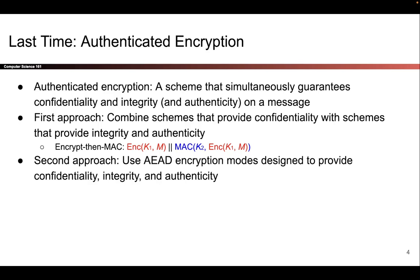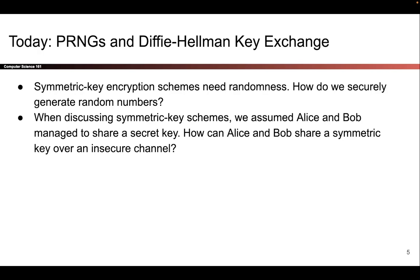So that's what we talked about last time. Today, we're going to answer two questions that we've been putting off for some time. One question is where the randomness comes from in our symmetric key schemes. The second question is how did Alice and Bob get that shared symmetric key in the first place? These are two questions we've been spending a lot of time not answering, but today we're finally going to answer them.